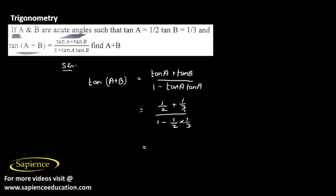1/2 plus 1/3 by cross multiplication becomes (3 + 2)/(3 × 2) which is 5/6, and in the denominator 1 minus (1/2 × 1/3) equals 1 - 1/6.